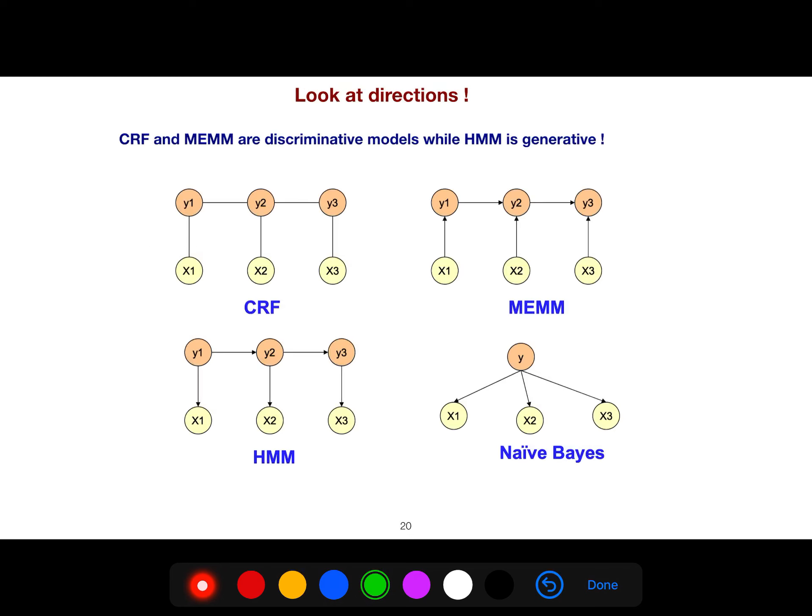Just look at the directions. HMM and Naive Bayes, as you see, and MEMM, all of them are directed models, directed graphs. But CRF is undirected. There is no direction between the observation and latent space. So another thing is in MEMM, the direction is from observation to the latent, but the HMM direction is quite the opposite, is from the latent to the observation.